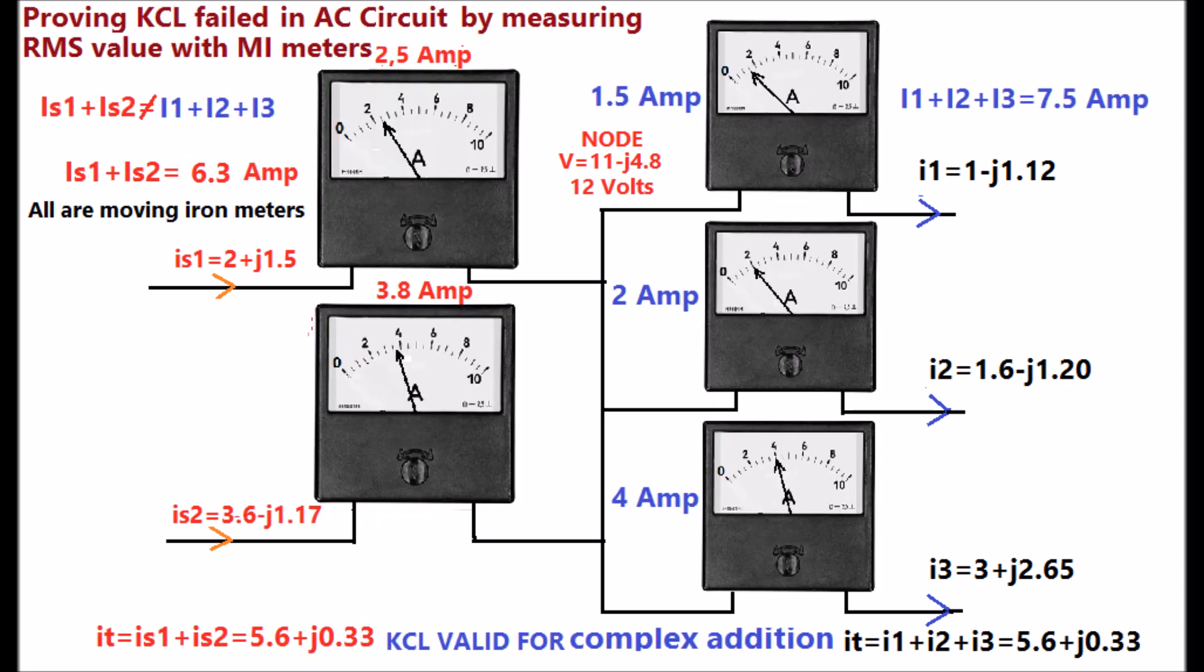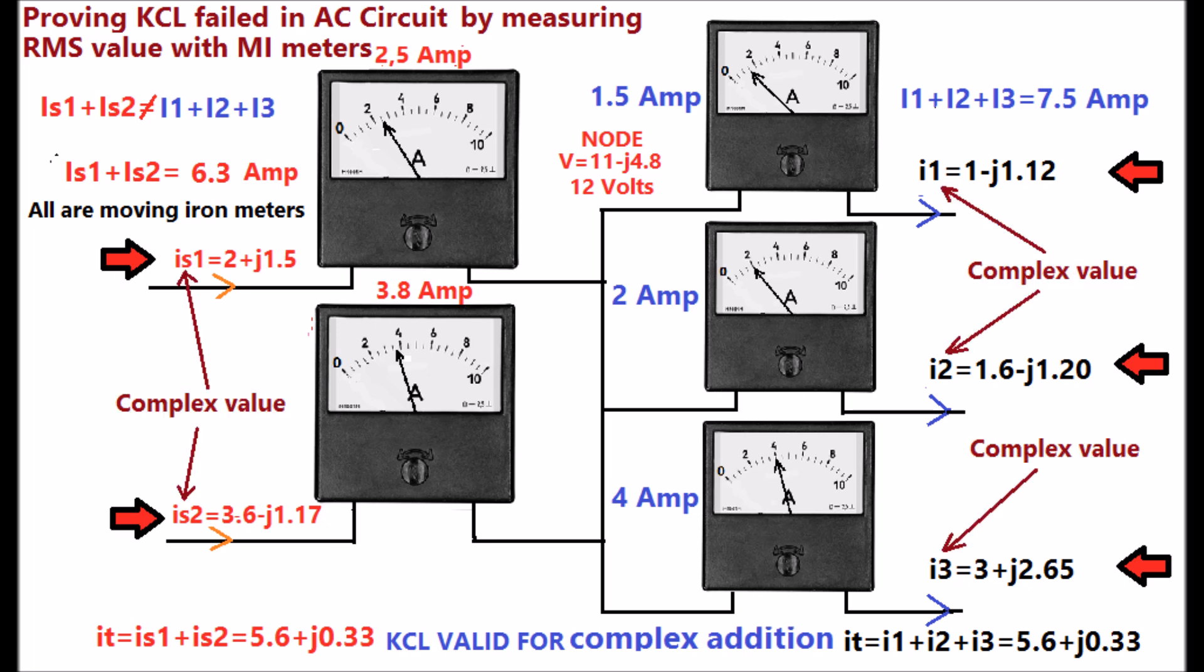See the display of a node in AC circuits. There are two incident currents and three outgoing currents. All are complex values. Small letters are used for representing complex values. Capital letters are for RMS value, as shown in the display.